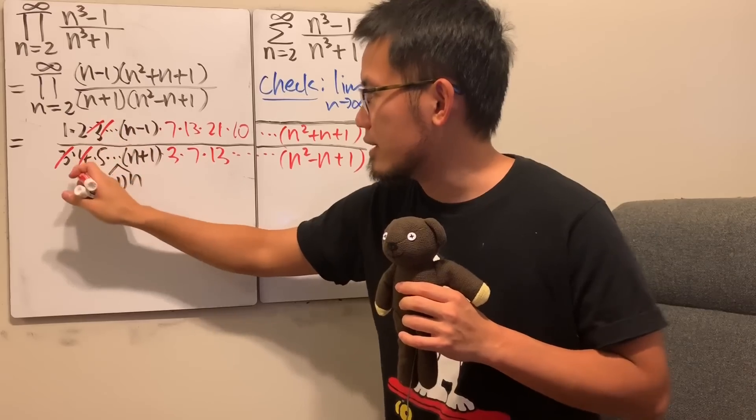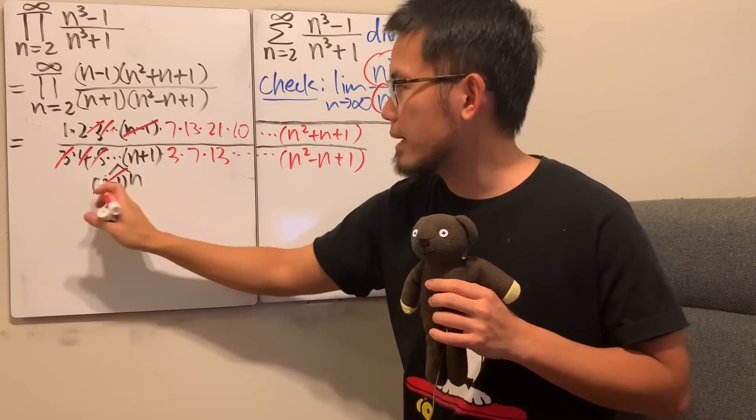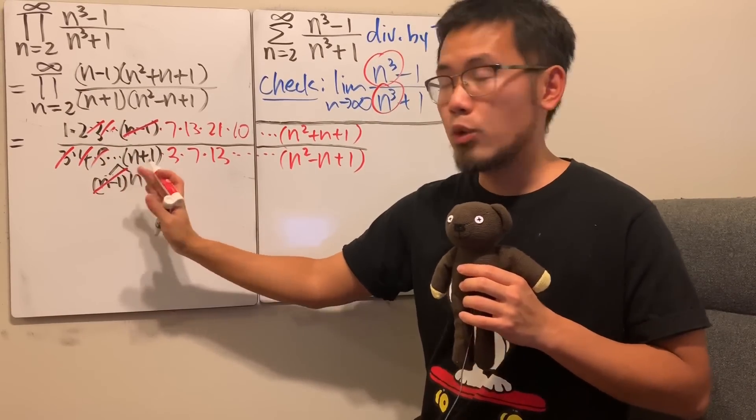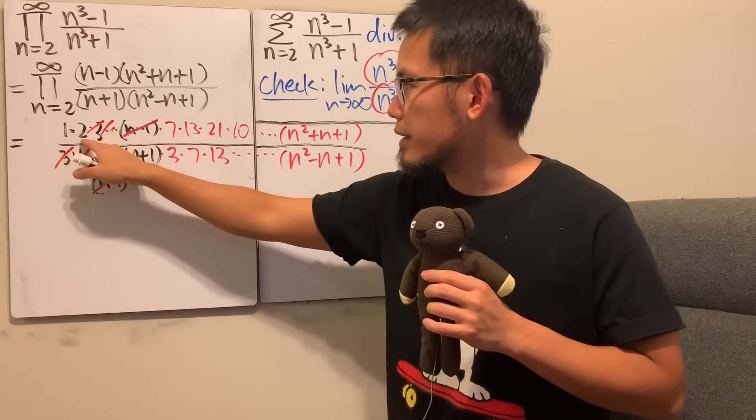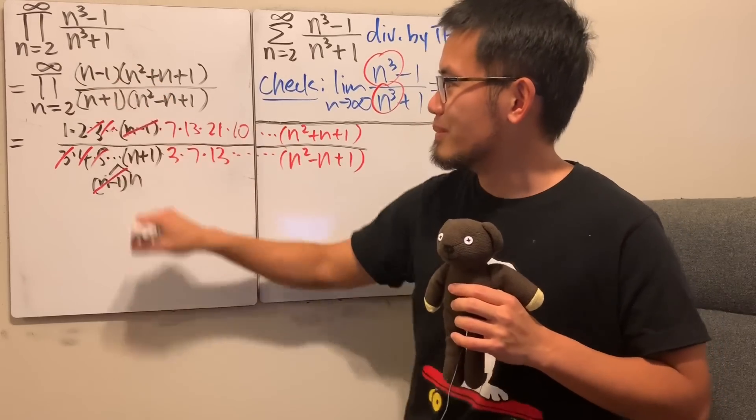the 3 and 3 cancel, 4 and 4 cancel, and so on, so on, so on. And the n minus 1 will cancel the n minus 1 right here. And what we have left is 1 and 2 on the top, and then n and n plus 1 on the bottom for the first term, right here.